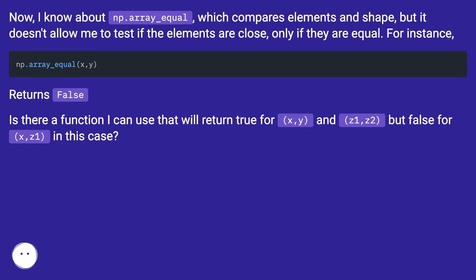For instance, returns false. Is there a function I can use that will return true for (x,y) and (z1,z2), but false for (x,z1) in this case?